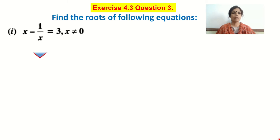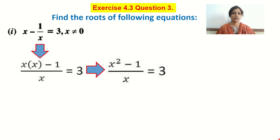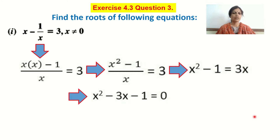We will cross multiply and compare the equation with the standard form of a quadratic equation. When you cross multiply, you get x into x minus 1 upon x equals 3. Taking x to the right side gives x squared minus 1 equals 3. Writing it in proper form, we get x squared minus 3x minus 1 equals 0, and this is a quadratic equation.